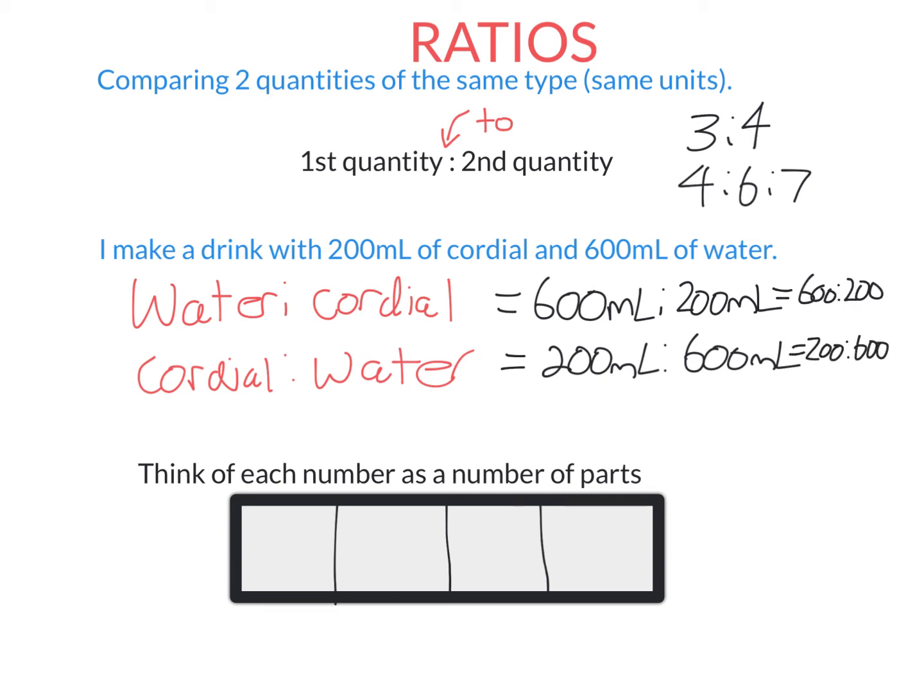Ratios are just fractions, which we've been working with in the last few lessons. So how does this mean we have a fraction? There is 200 plus 600, 800 mL of drink in total. So water is 600 of the 800 mL, and cordial is 200 of the 800 mL.